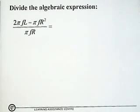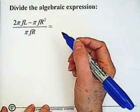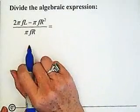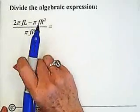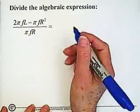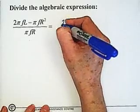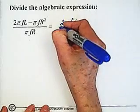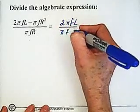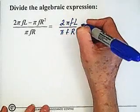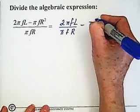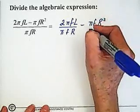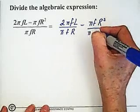Here we have something that you would see in electronics — a question with frequency, inductors, and resistance. We're trying to solve this question, and again what we're going to do is take each piece in the numerator and put it over the same denominator. So that gives us 2πfl over πfr, minus πfr² over πfr.